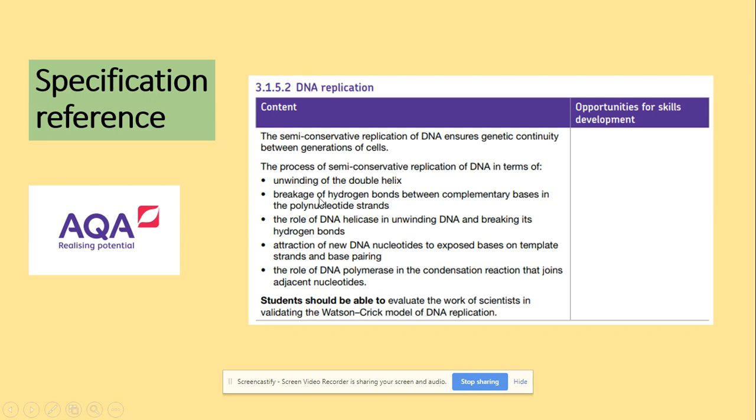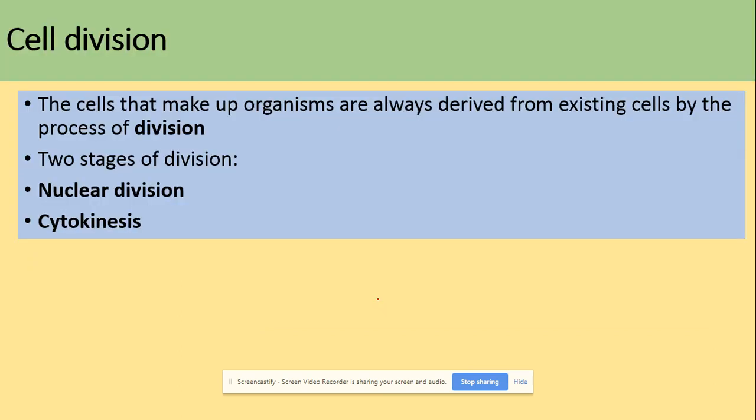We will be looking at the process of DNA replication as follows, including the important enzymes. So we will be looking at the DNA helicase that breaks hydrogen bonds and DNA polymerase that forms the phosphodiester bond.